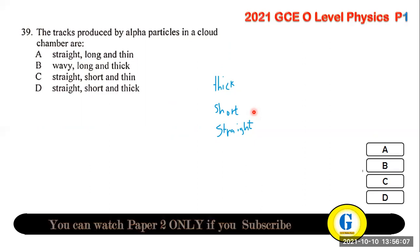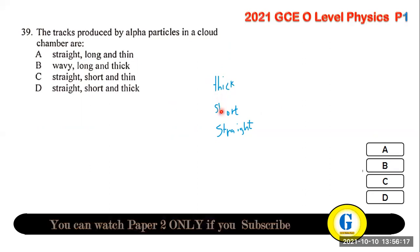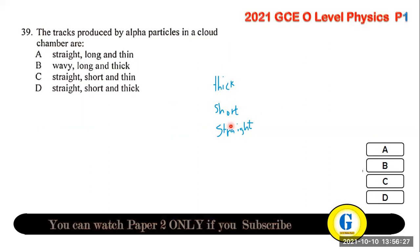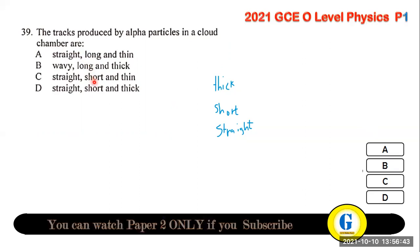Question 39: the tracks produced by alpha particles in the cloud chamber are thick, short, and straight. Alpha particles are heavy, so they travel straight (difficult to deflect), cannot travel very fast, and their tracks are thick and short. The answer is D.